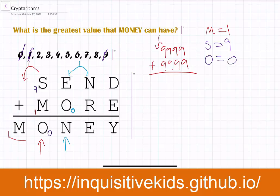Now all we have to do is test values for E. Since the question asks for the greatest value that MONEY can have, we want E to be as large as possible. The biggest available number is 8, so E equals 8 would make N equal 9. But 9 is already taken by S, so that won't work.